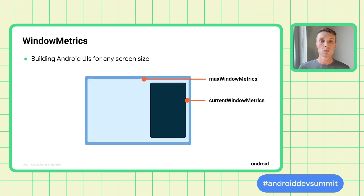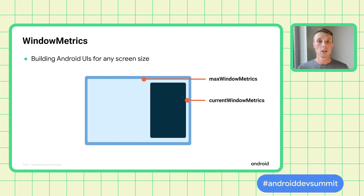Let's start with window metrics. In Android 11, a new set of Window Manager APIs was introduced to give you accurate measurements of the current window your app is running in. On large screen devices, it's very likely that your application won't be occupying the entire display, since users engage in split screen and other forms of multi-window much more often.